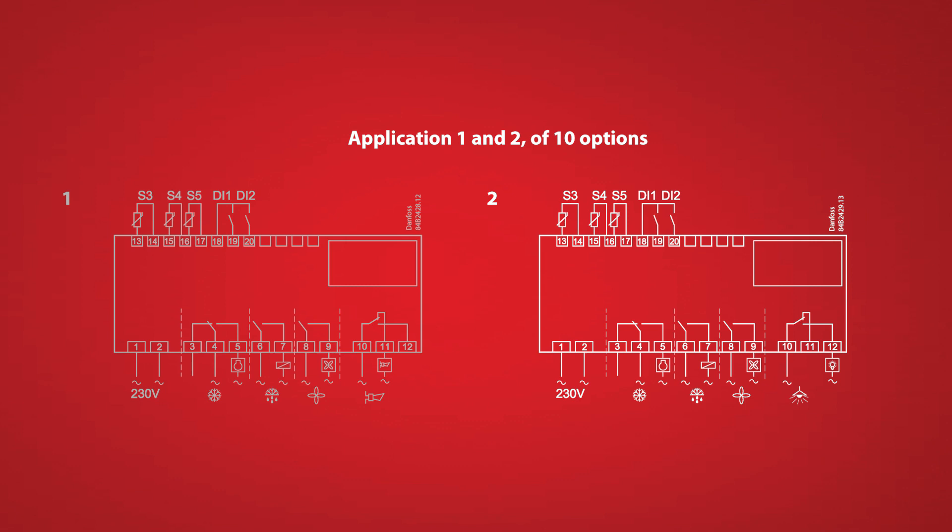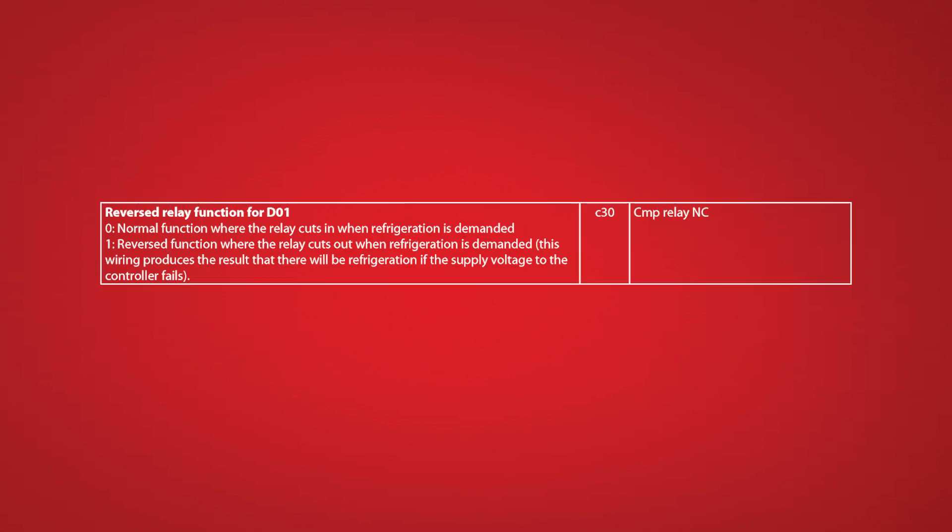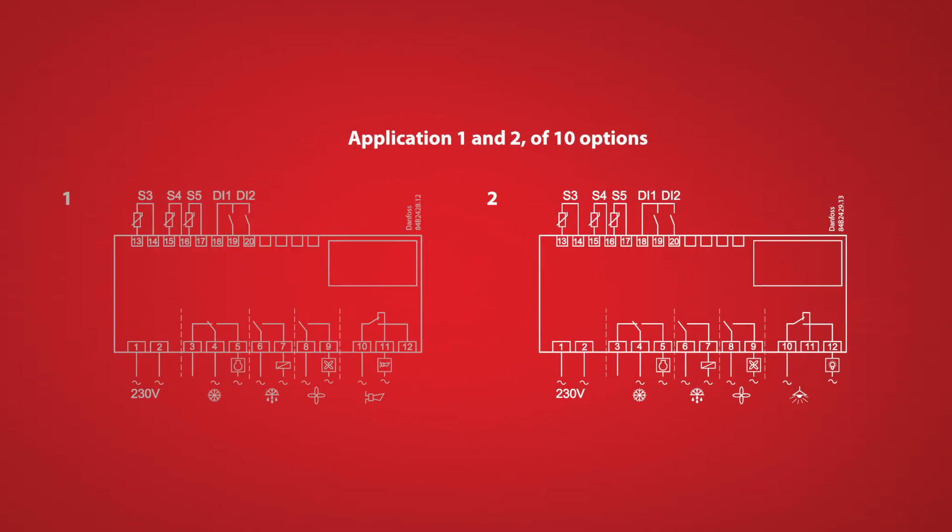For application 2, the compressor will be wired to terminals 4 and 5 as normally opened. This can also be changed to normally closed in parameter C30. The defrost will be wired to terminals 6 and 7, the fans will be wired to 8 and 9, and the lighting will be wired to 10 and 12.